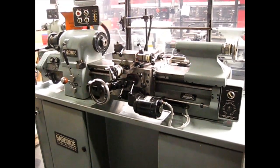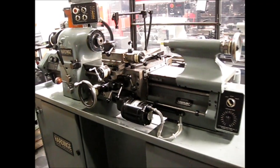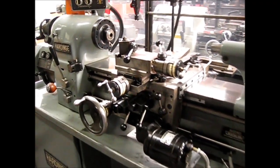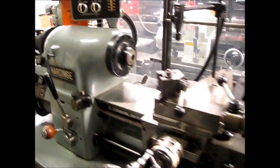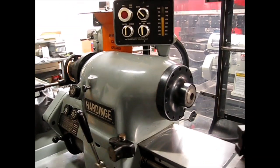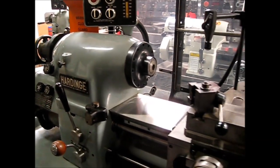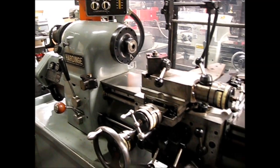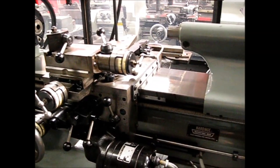This is our 1982 Hardinch HLVH-EM English metric tool room lathe currently under power running it right around 1500 rpm. This machine was a super rare barn find.